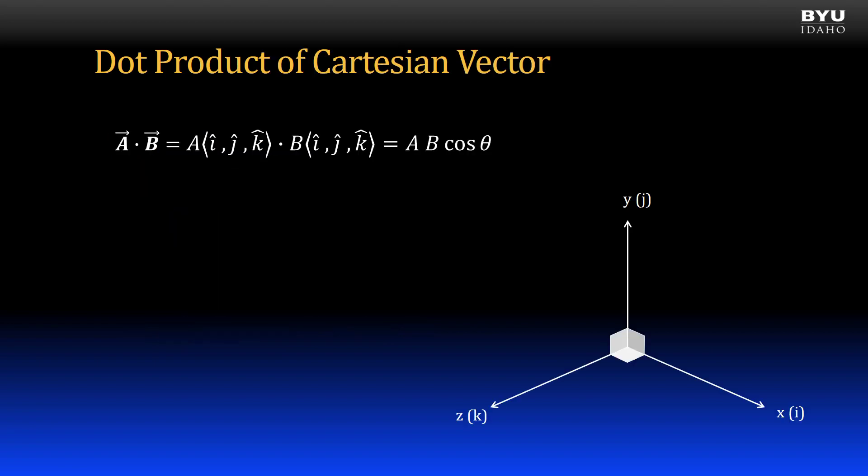Now let's look at the dot product of vectors in Cartesian notation. The way we handle this is to dot the i component of the A vector with the i, j, and k components of the B vector, then do the same with the j and k components of the A vector. Let's see how this works if A and B happen to be unit vectors. In other words, both have a magnitude of 1. Let's start by dotting the i component of A with the i component of B. Since the i directions for the two components are parallel, the angle between those vector components would be 0. The cosine of 0 is 1, so i dot i has a magnitude of 1.